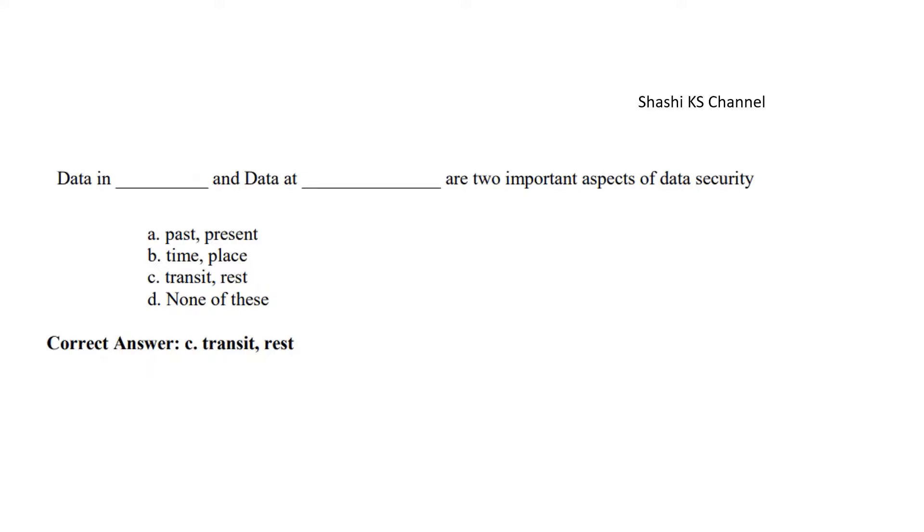Next question, data in dash and data at dash are the two important aspects of data security. Option A, past, present. Option B, time and place. Option C, transit and rest. And option D, none of these. The right answer to this is transit and rest.